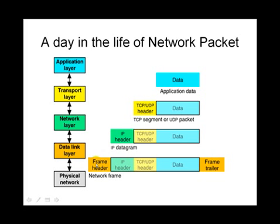As this packet moves up the OSI stack, various headers are stripped by the corresponding layers. The data link layer is going to strip off the ethernet header and push the packet up. This is how the network layer sees the packet now — stripped of the ethernet header, the yellow frame here which says frame header. Now the network layer is going to strip the IP header and just give the TCP header and data to the transport layer, which is TCP or UDP depending upon which packet it is. The transport layer once again strips the TCP/UDP header and just passes the data up to the application layer.